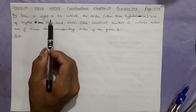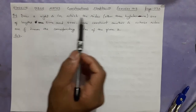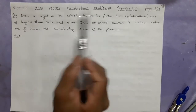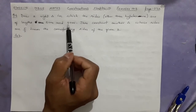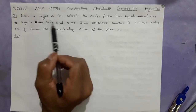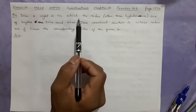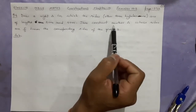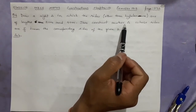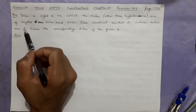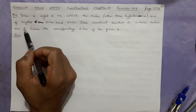Here the question is: draw a right triangle in which the sides other than the hypotenuse are of length 5 centimeter and 4 centimeter — where the 90 degrees is, those sides are 5 and 4 centimeter. After making the triangle, you have to construct another triangle whose sides are 5 by 3 times the corresponding sides. The new triangle will be bigger than the original triangle.